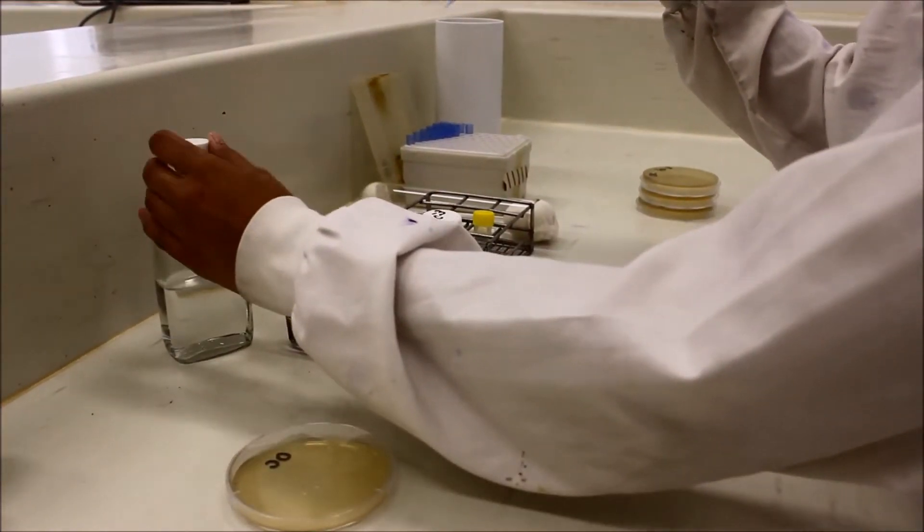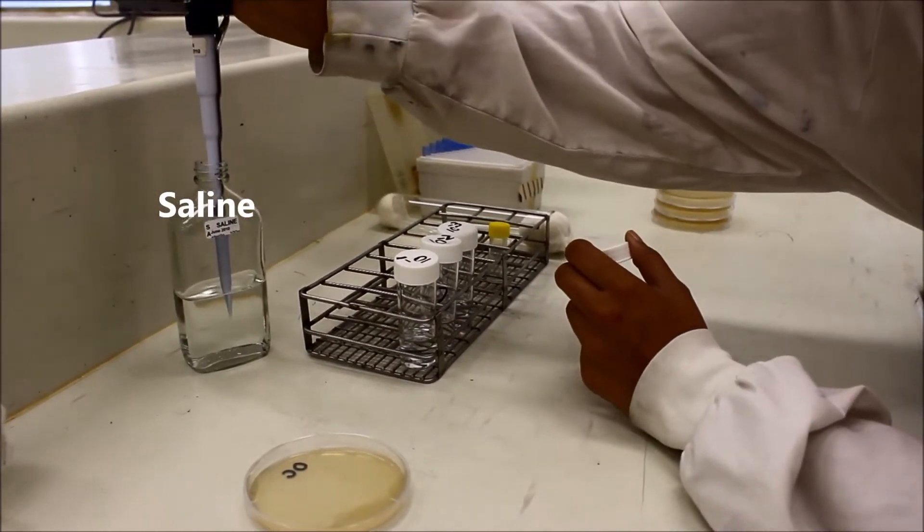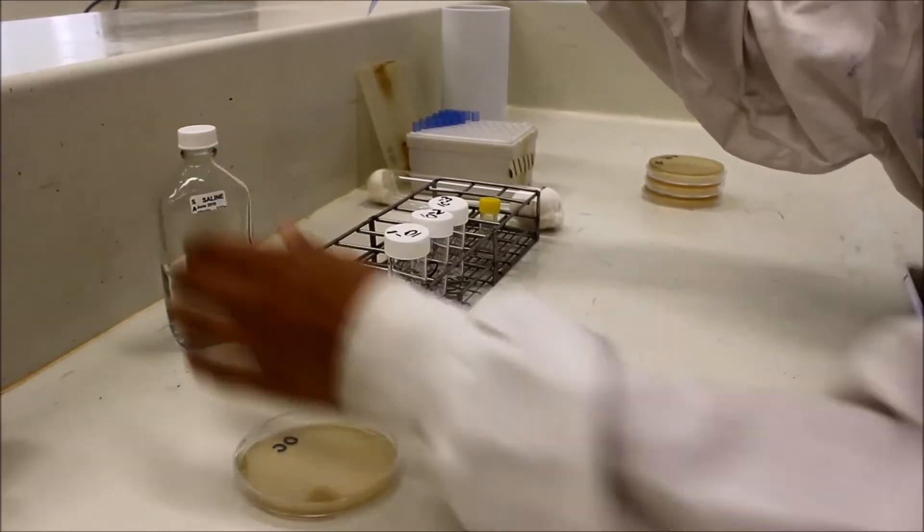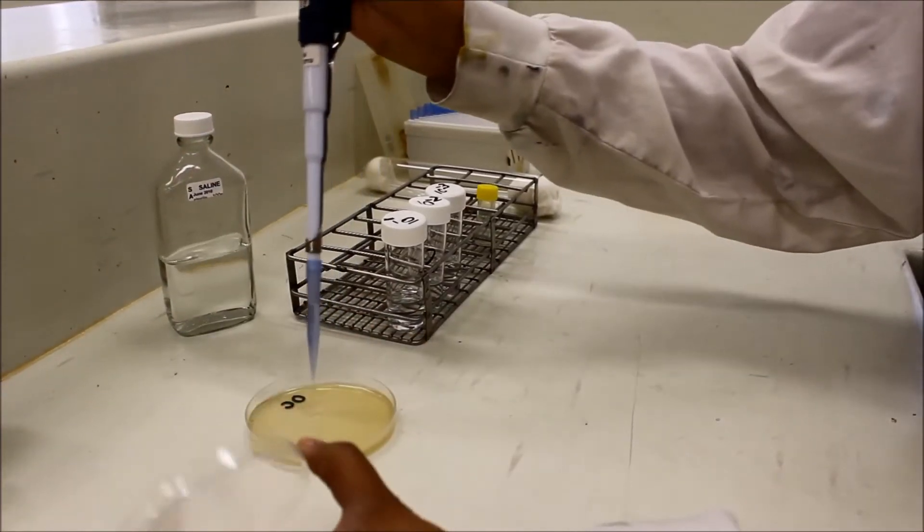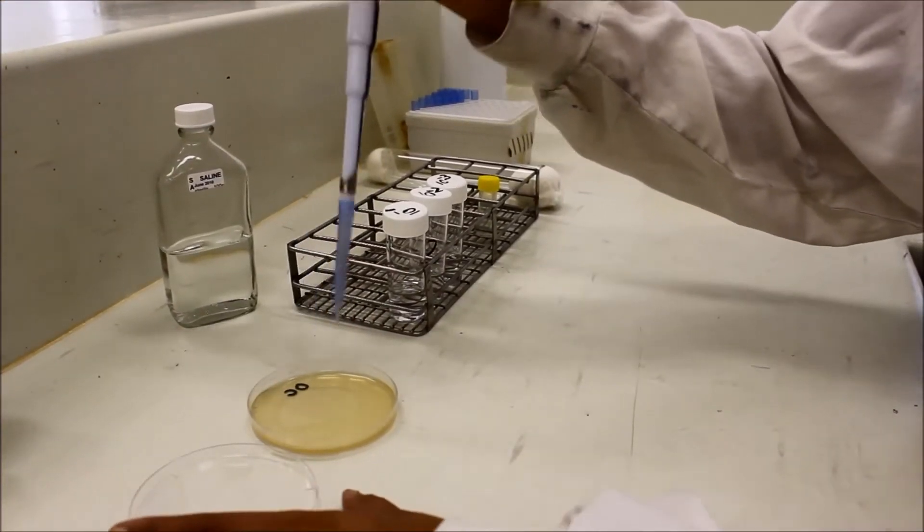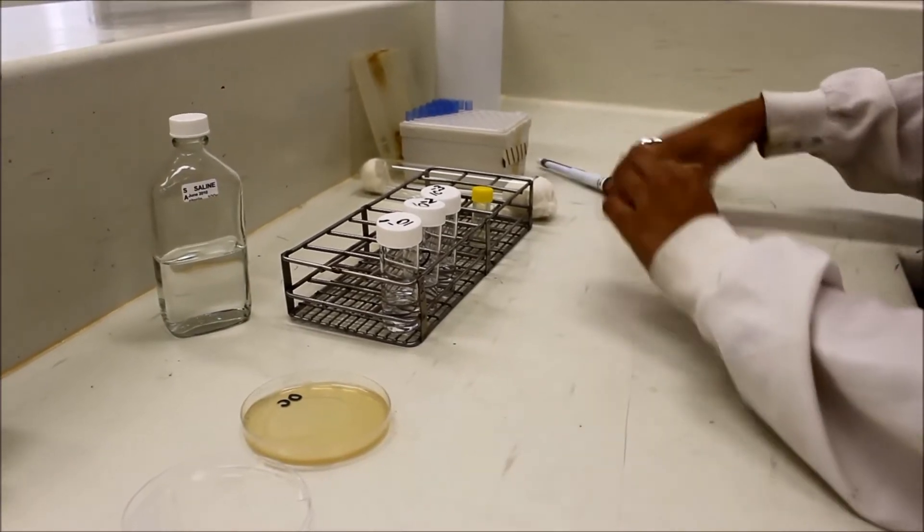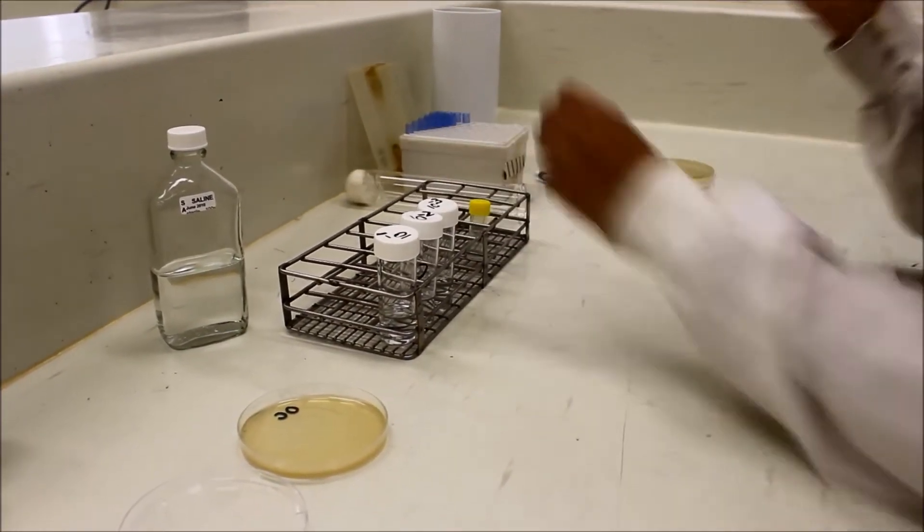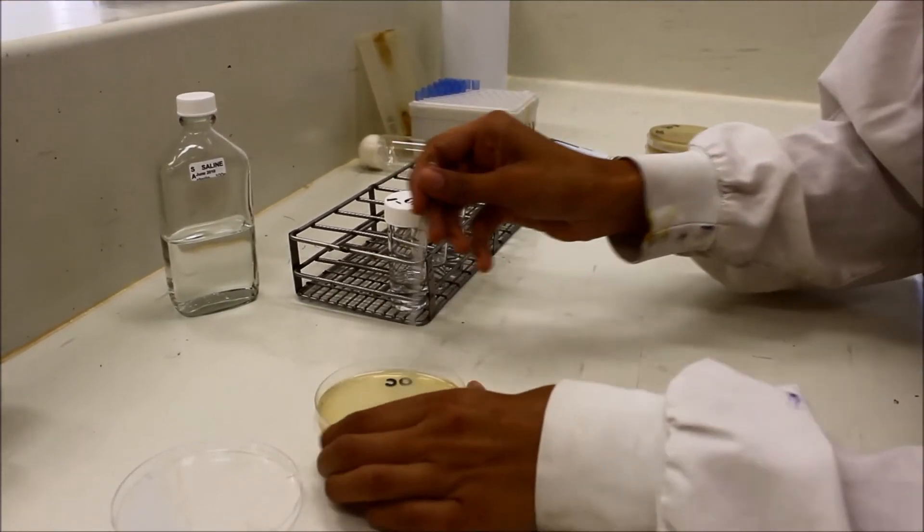Wash the surface of the zero C plate by spreading with one milliliter of saline using a glass spreader. This washing process is for calculating the number of viable cells growing on the surface.